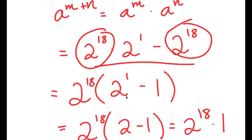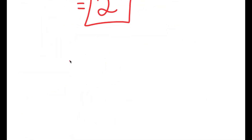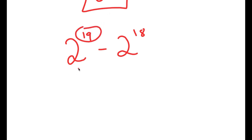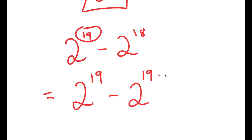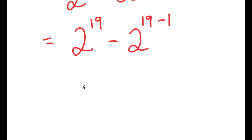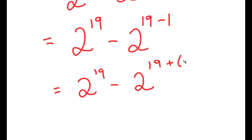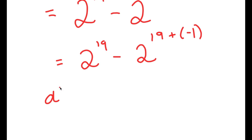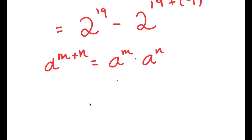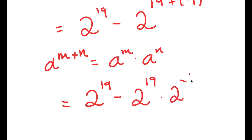Now, there is actually another method of solving this problem. Going back, our original problem was 2 to the power of 19 minus 2 to the power of 18. What we did was write 19 as 18 plus 1 and solved by factoring out 2 to the power of 18. Now, what if instead of rewriting 19, I rewrite 2 to the power of 18 as 2 to the power of 19 minus 1? I'm going to rewrite 19 minus 1 as 19 plus negative 1, and using the same exponent property, 2 to the power of 19 plus negative 1 equals 2 to the power of 19 times 2 to the power of negative 1. So I can still do it.